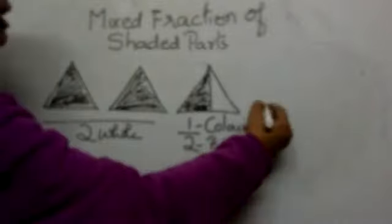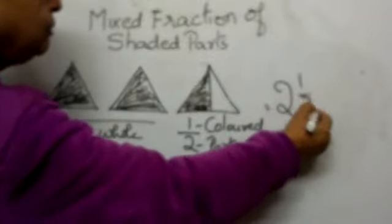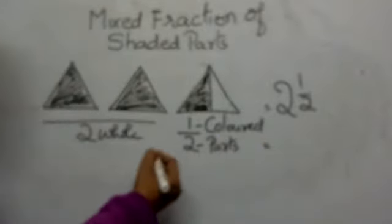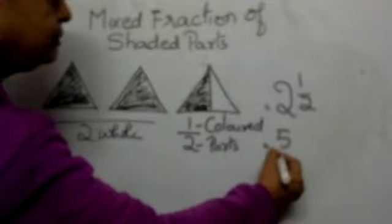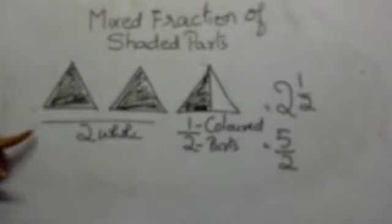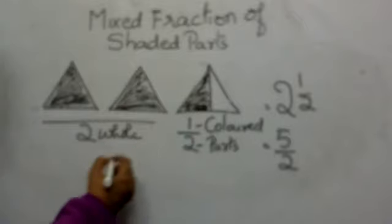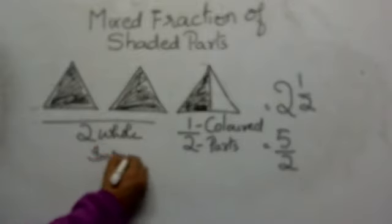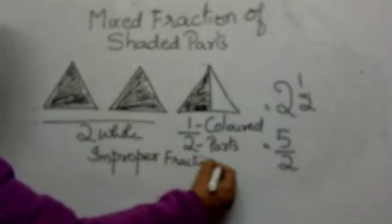Now when we want to write the fraction, we write the mixed fraction as two and one by two, because there are two wholes and one by two. And when we want to write the improper fraction, it is two multiplied by two is four, plus one is five by two. Or if you add the parts, you also get five by two. So the improper fraction is five by two.